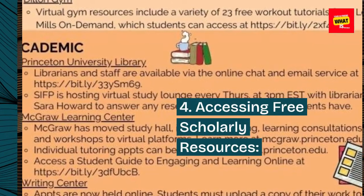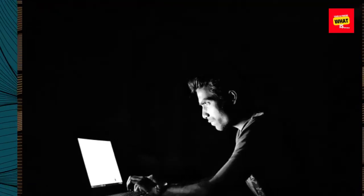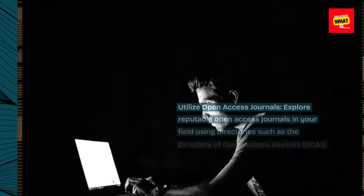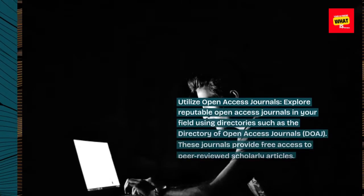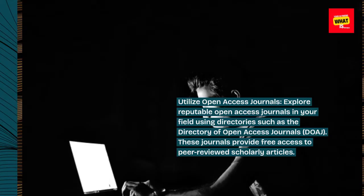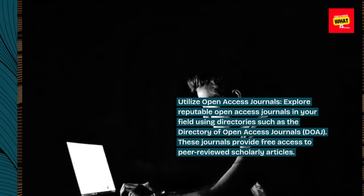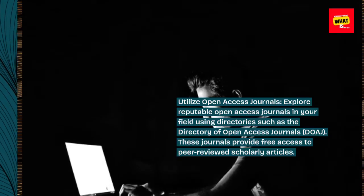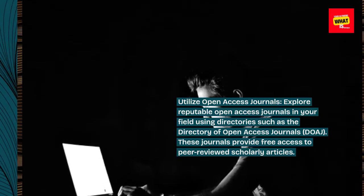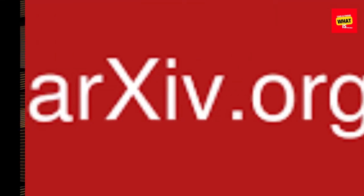Accessing Free Scholarly Resources. Utilize Open Access Journals: explore reputable open access journals in your field using directories such as the Directory of Open Access Journals, DOAJ. These journals provide free access to peer-reviewed scholarly articles.